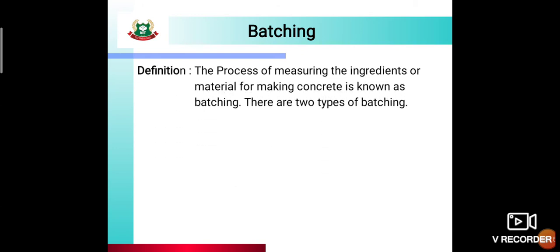First we see the definition: what is batching? Batching is the process of measuring the ingredients or materials for making concrete. In this process, the ingredients of concrete — cement, fine aggregate, coarse aggregate, water-cement ratio — all these are measured, meaning their quantity is found out to determine how much of each is needed. That process is called batching.